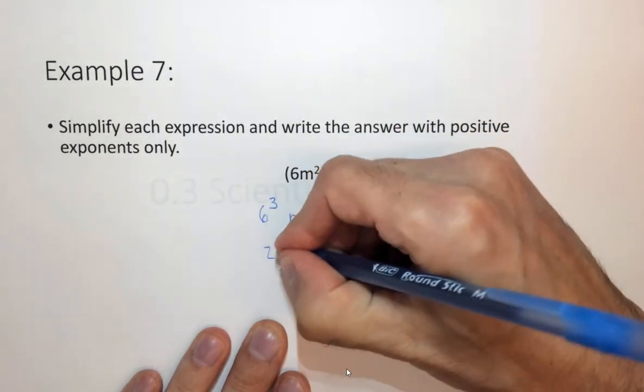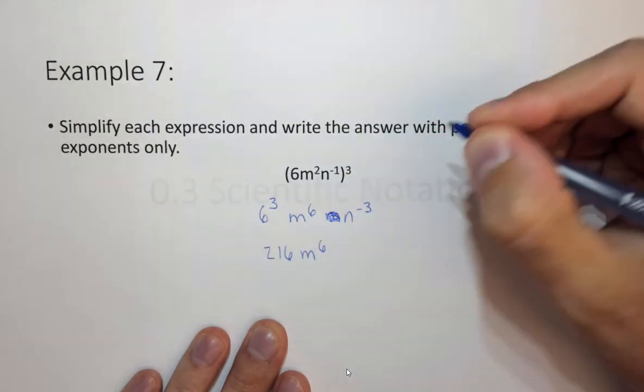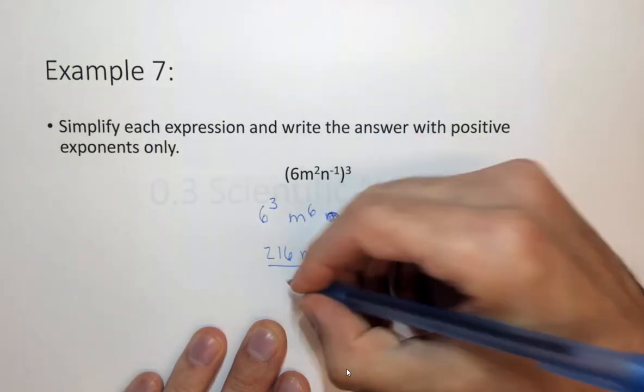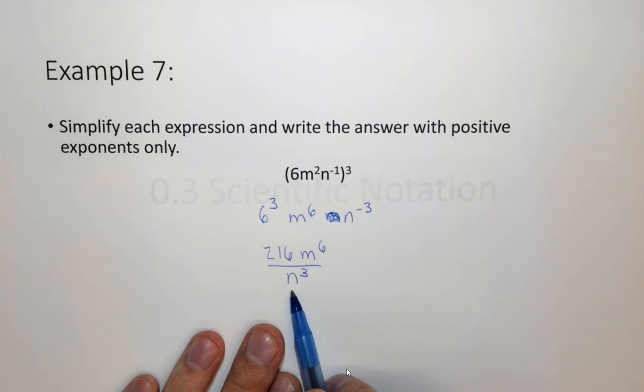6 cubed is 216. You can use a calculator to do that. m to the sixth, and now because this is n to the minus 3 we want to put it on the bottom. So we can put that over n cubed.